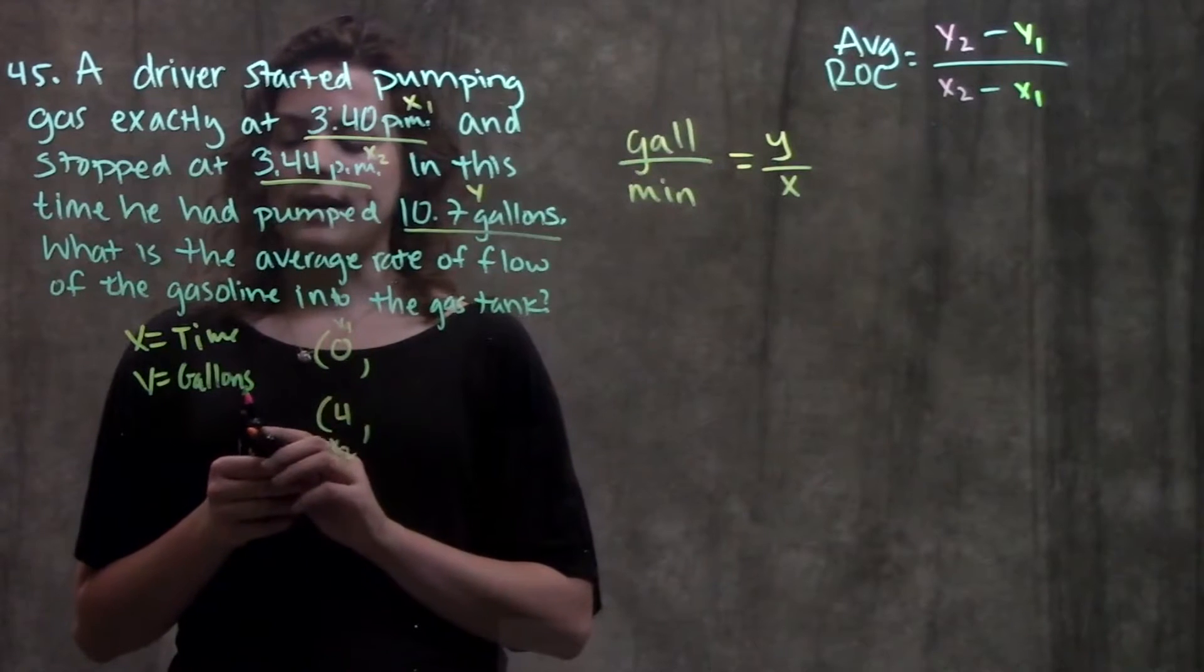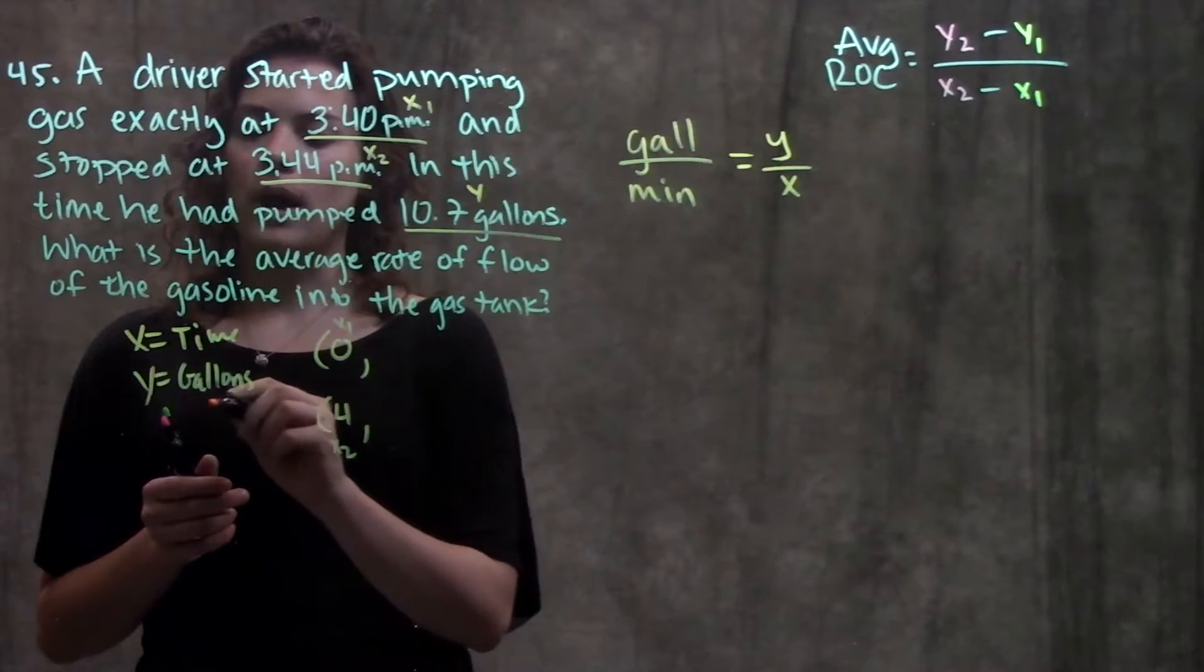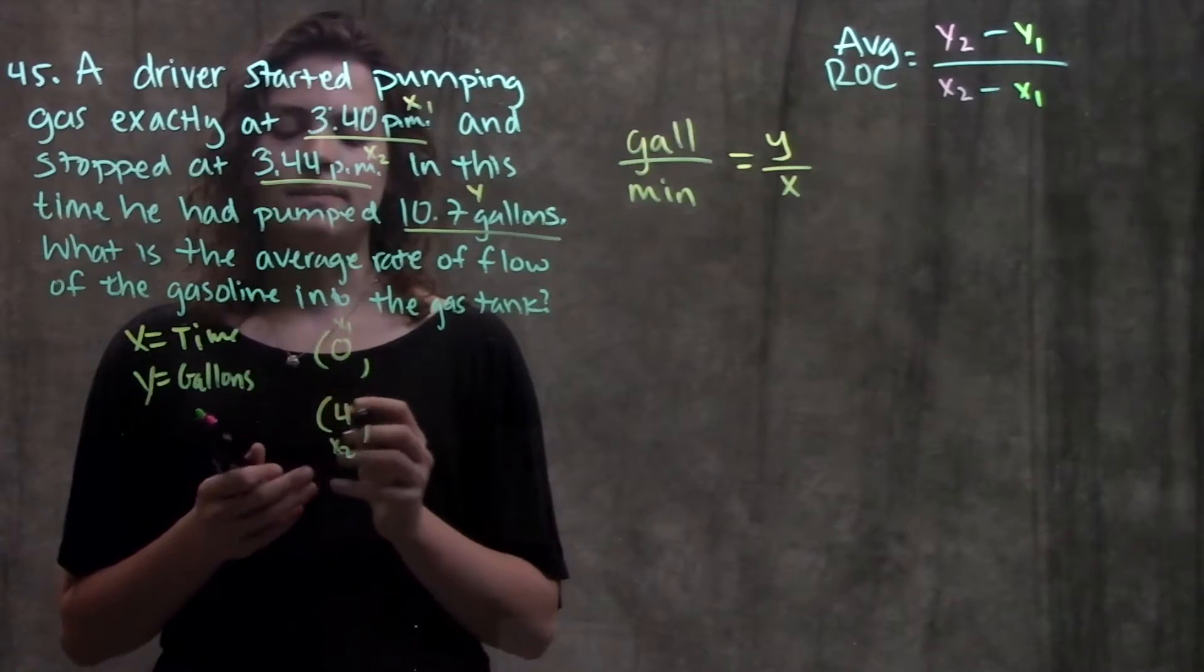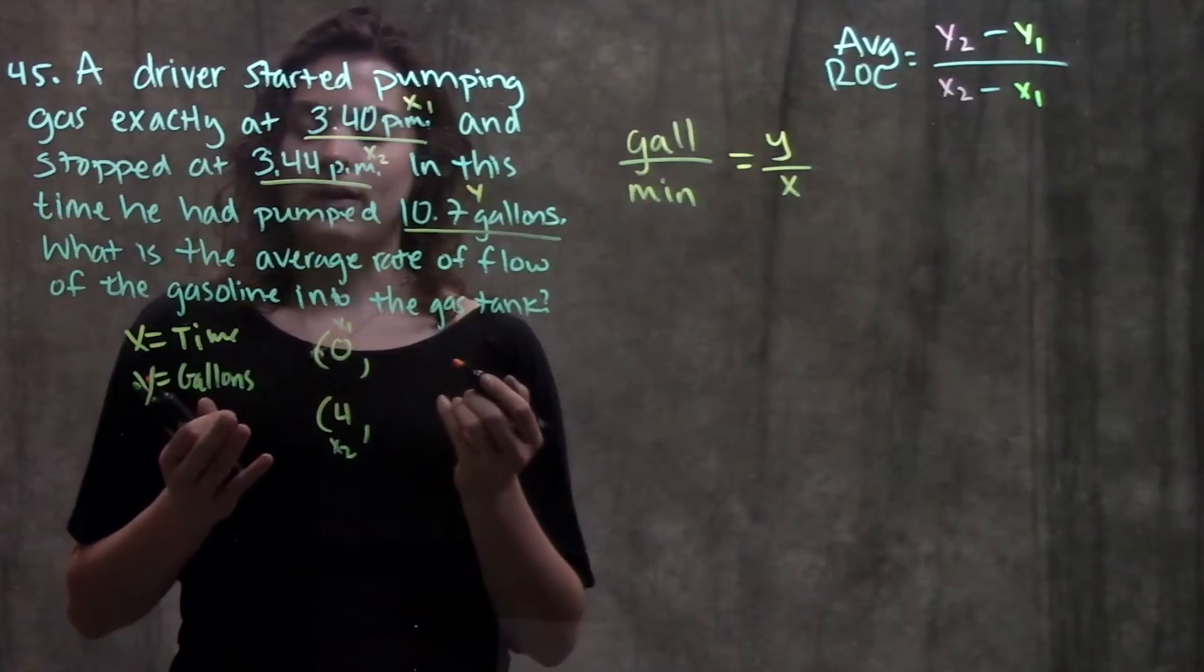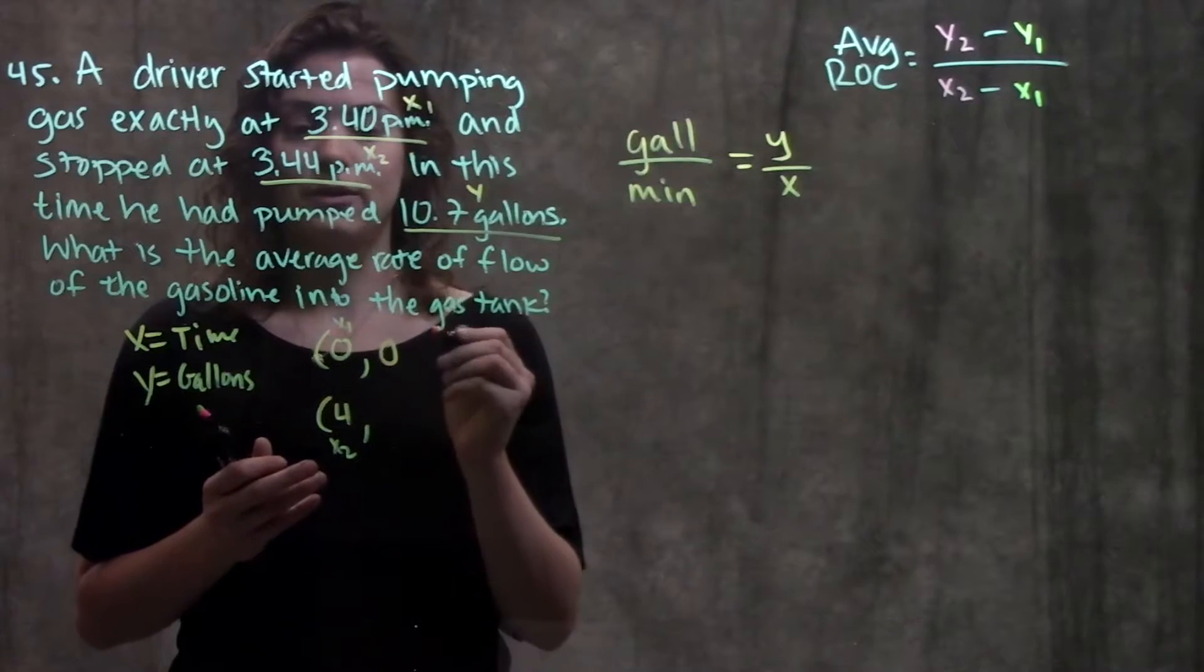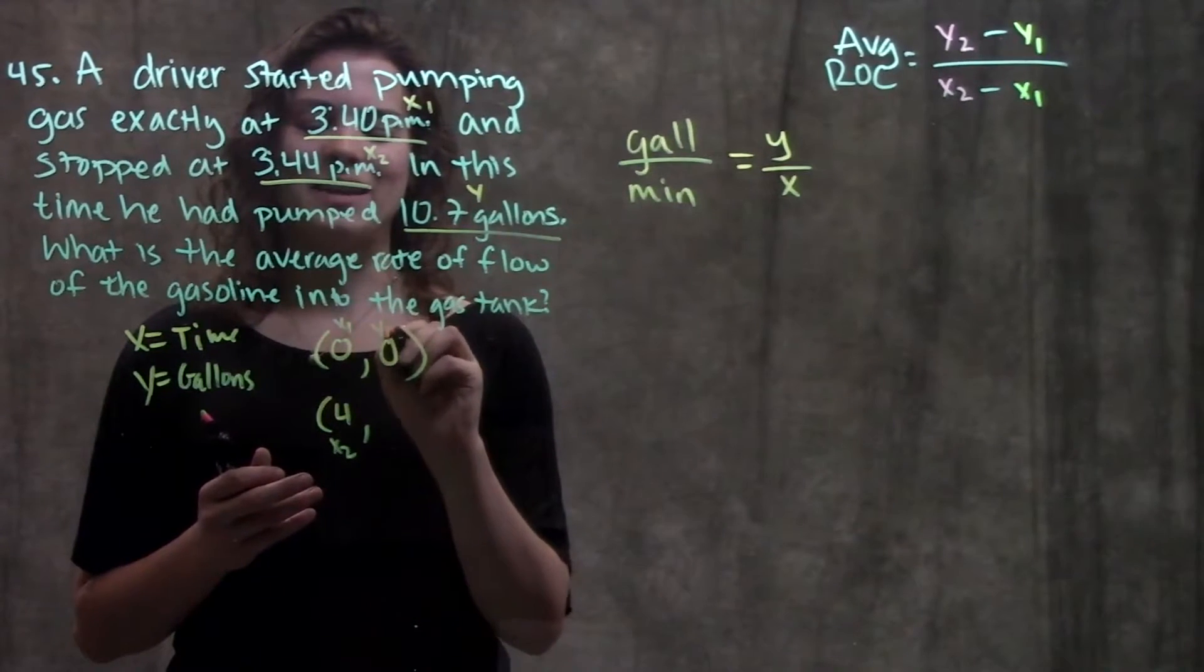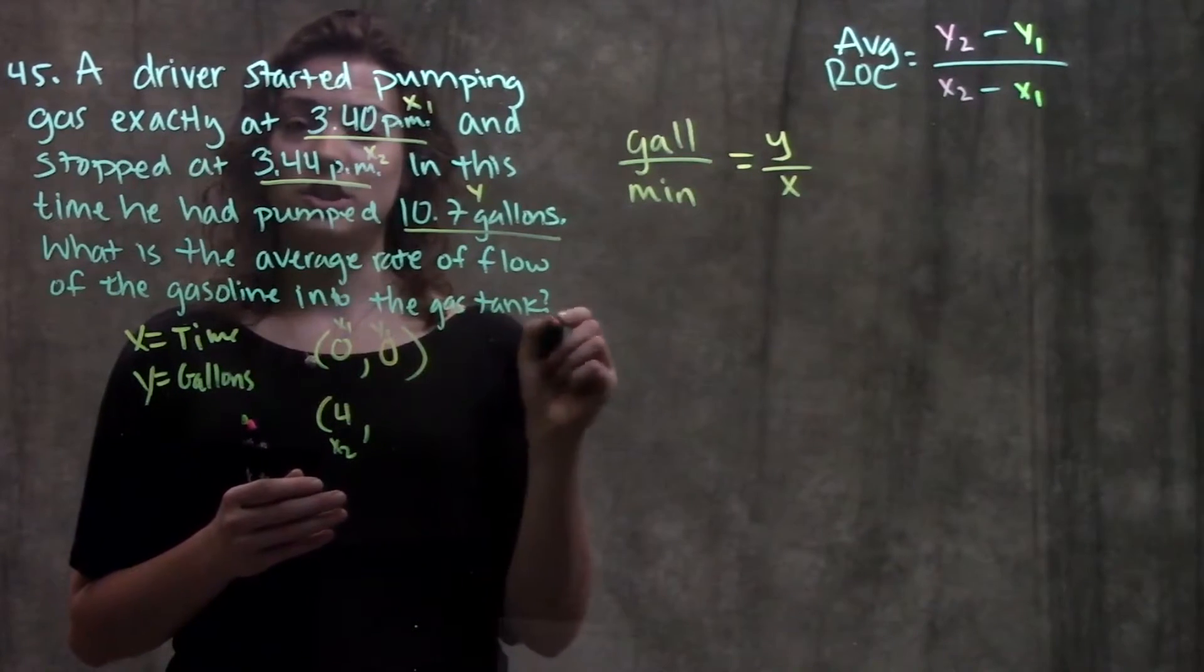And now I think about my y values. So remember, y represents number of gallons in the tank. At time zero, how many gallons were in the tank? Well, I hadn't started pumping, so zero gallons. So that means that these are my x1 and my y1 values, just zero, zero.